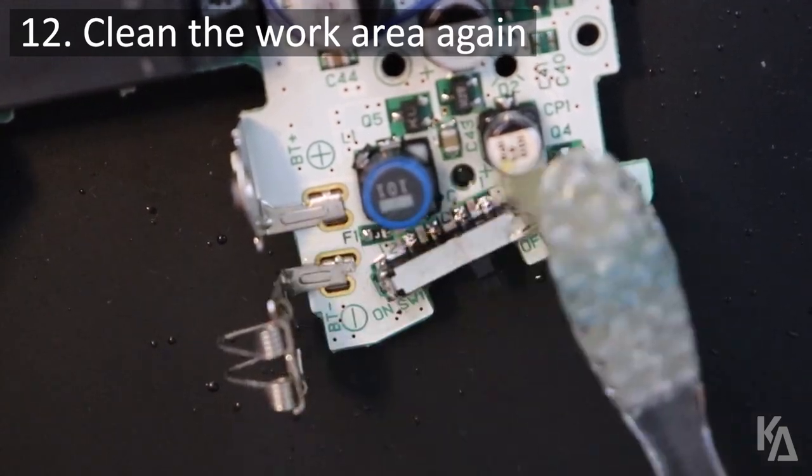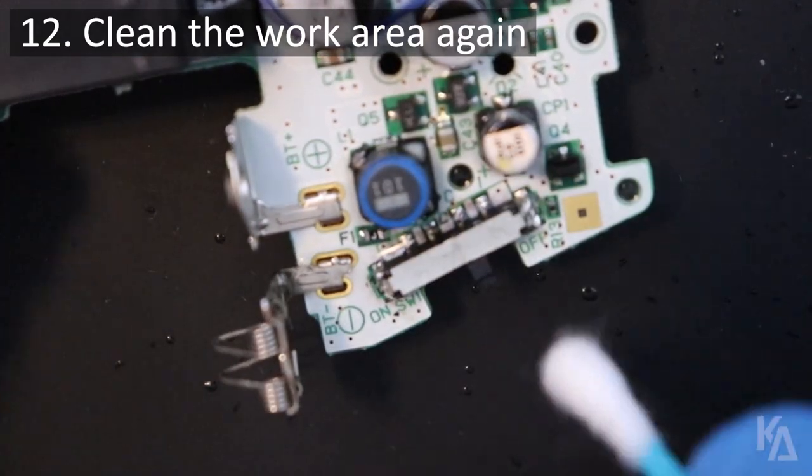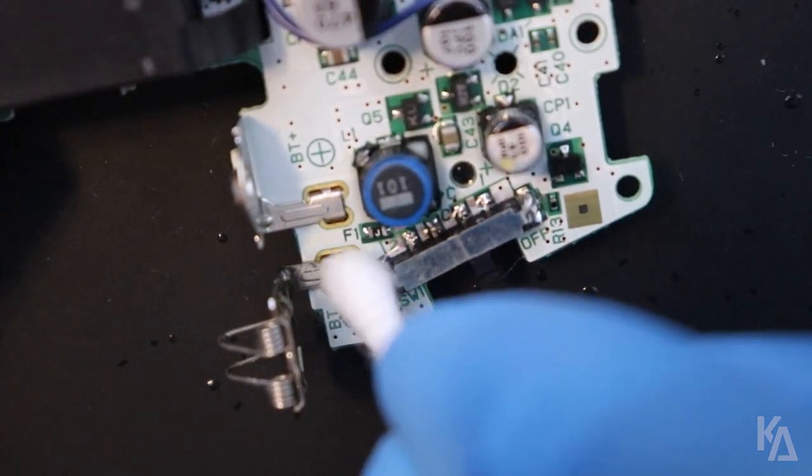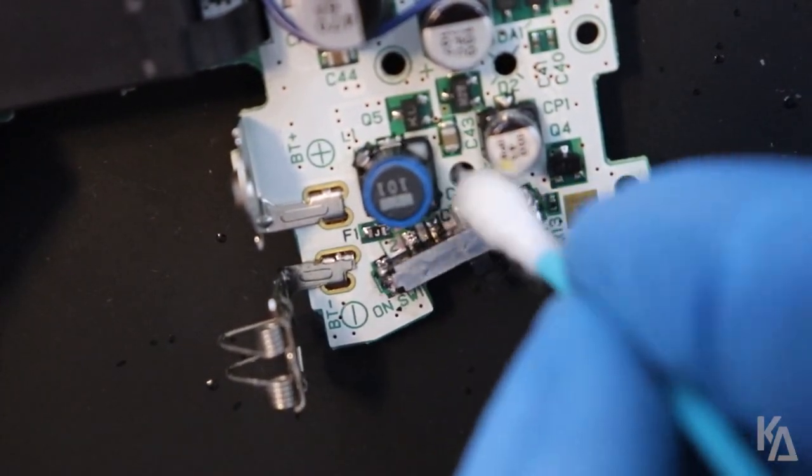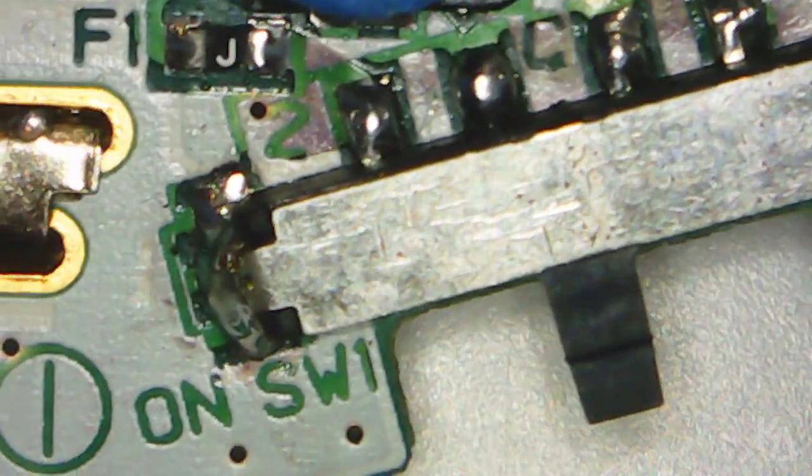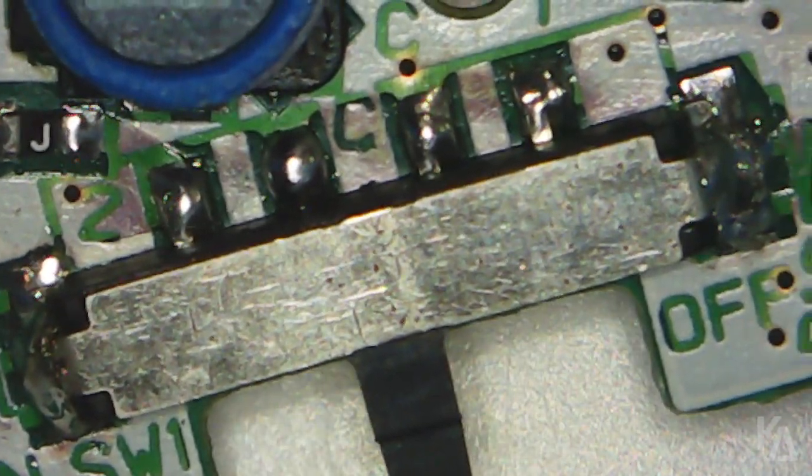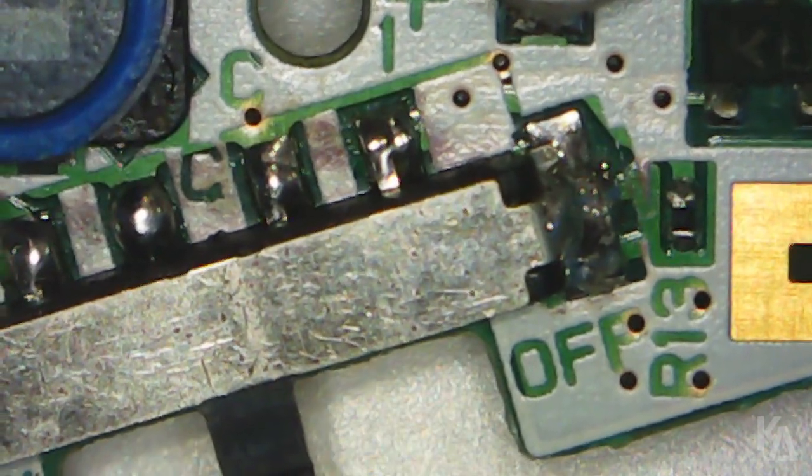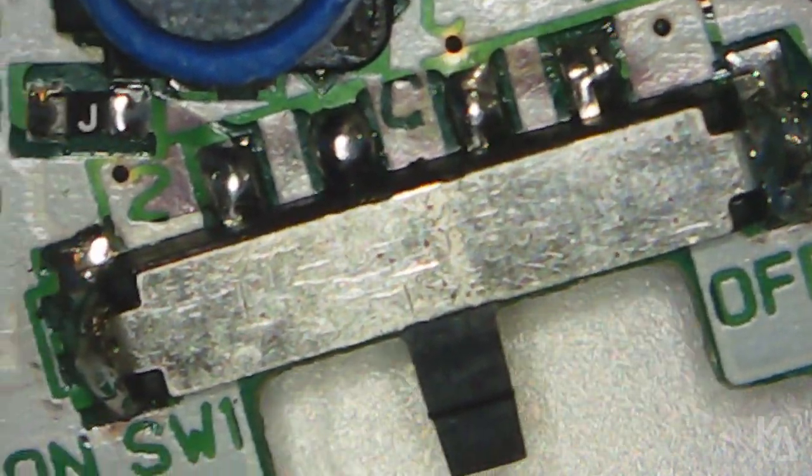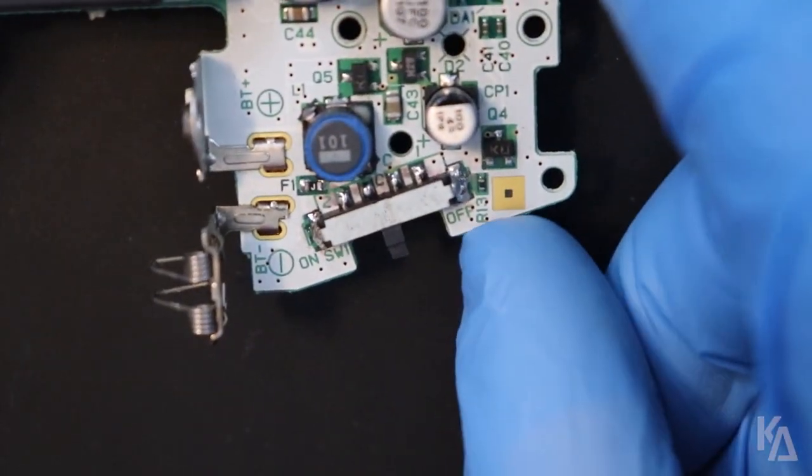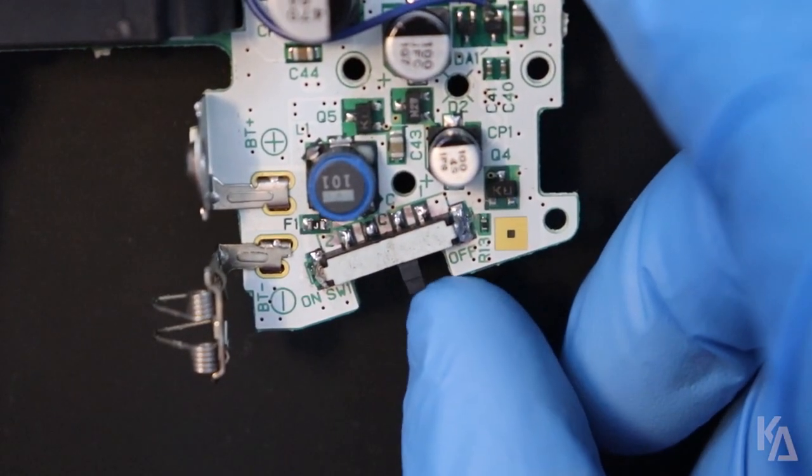Once you're satisfied with your work, go ahead and clean your workspace with some alcohol again. Here's what your work should resemble seen under a microscope. Make sure you've cleaned up all the gunk left behind by the flux. Also, check that you don't have any bridged contacts or cold solder joints. My work is certainly not perfect, but for the size of the workspace, I'm happy with it.